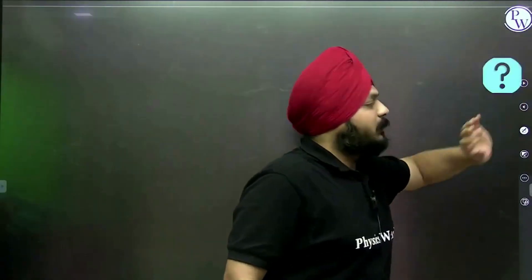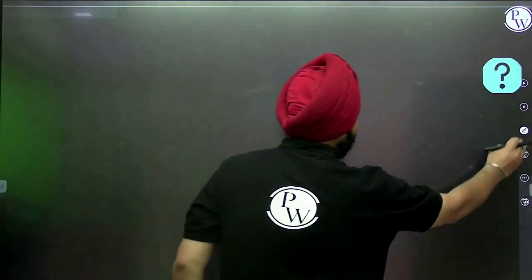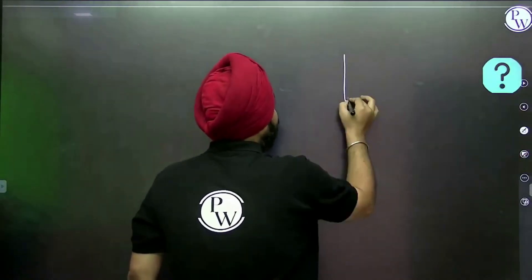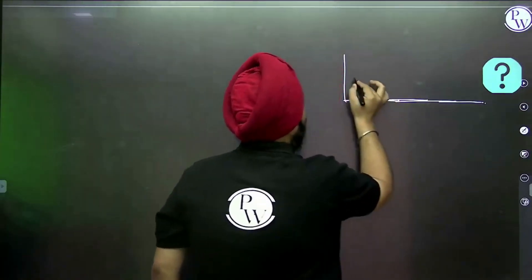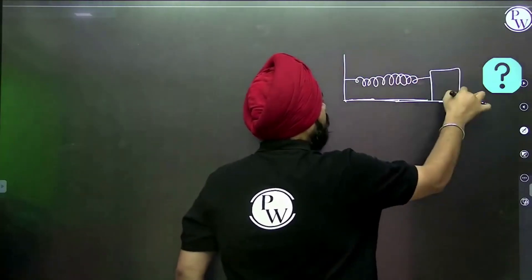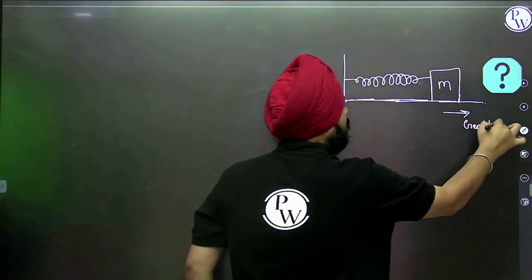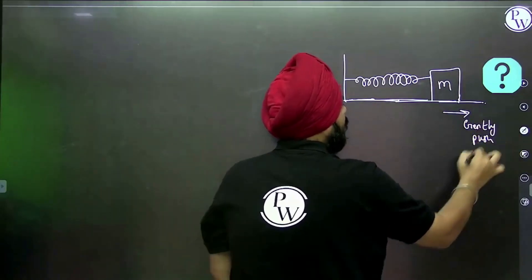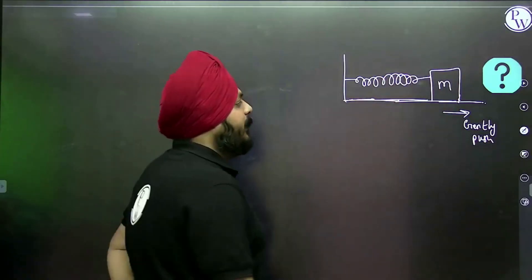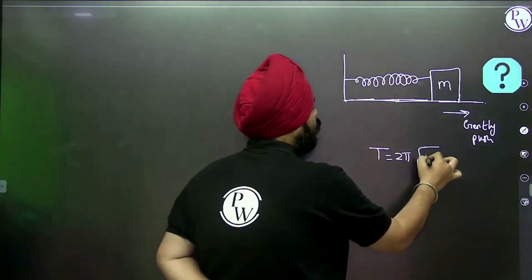You all are aware there are some cases in which the time period of SHMs are asked. Suppose this is a spring with mass M — if a gentle push is given, it is going to start performing SHM. The time period T is equal to 2π under root of M by K.